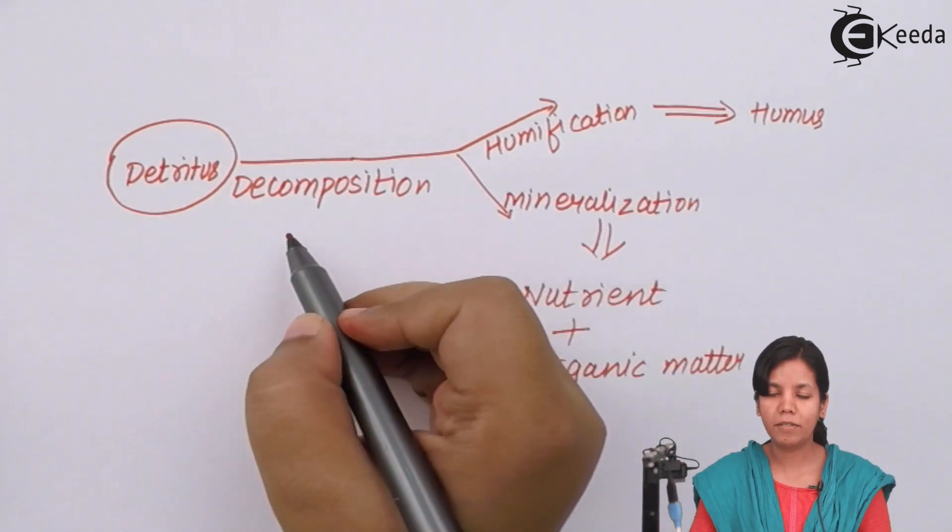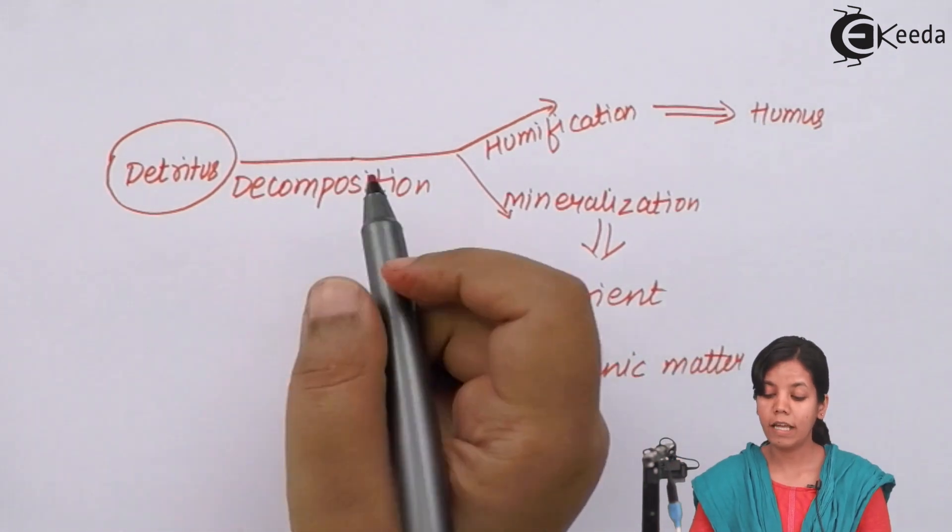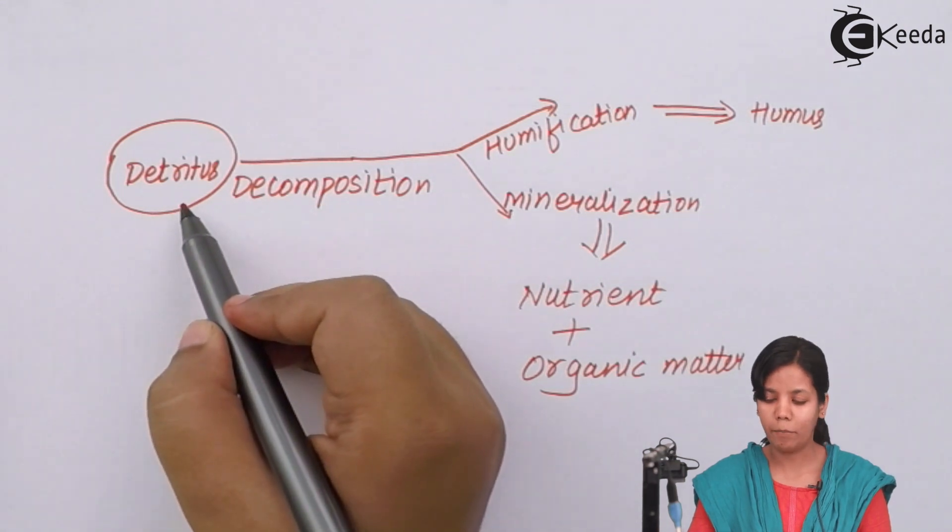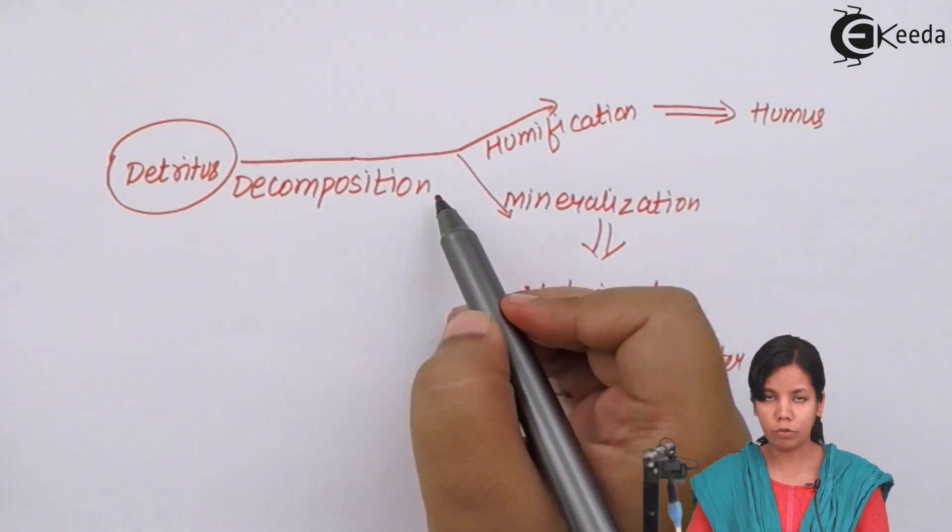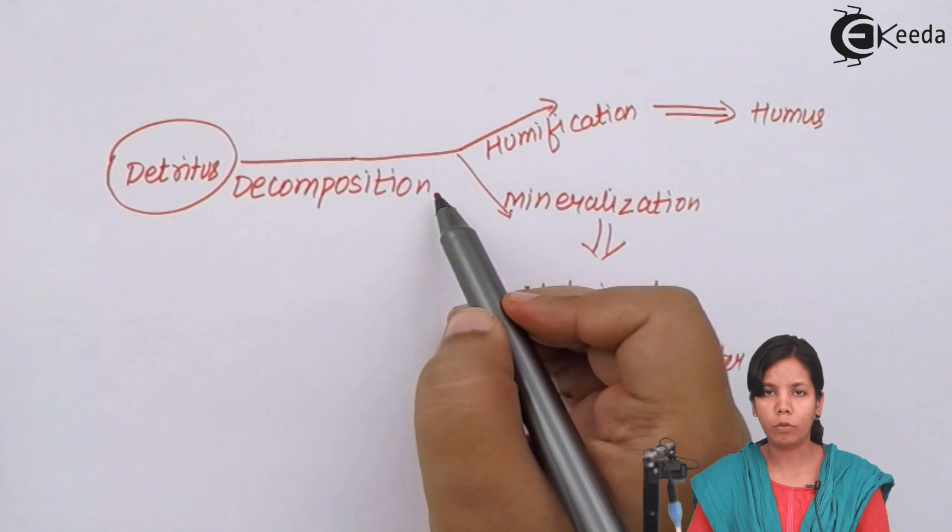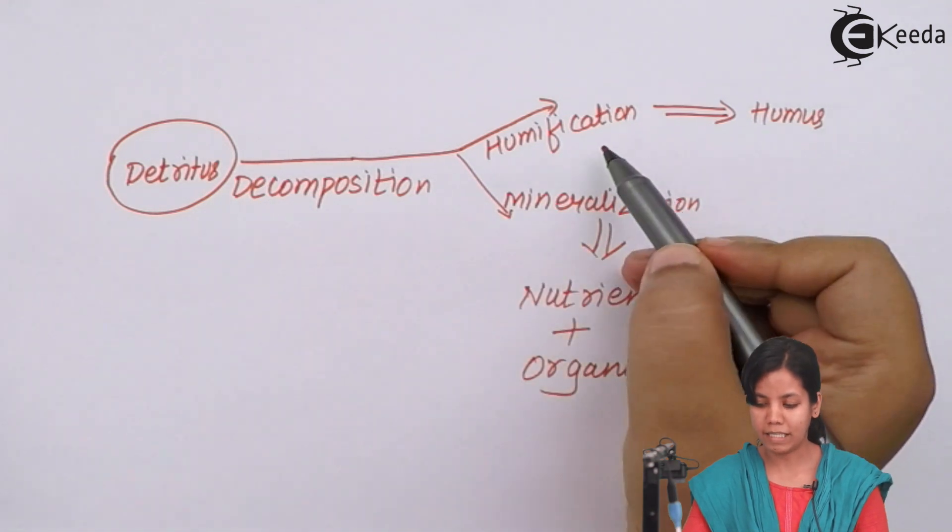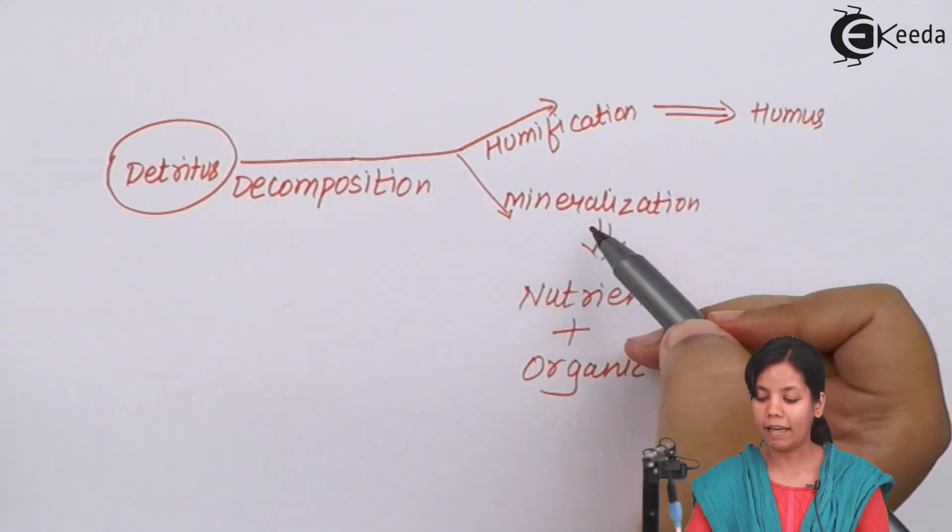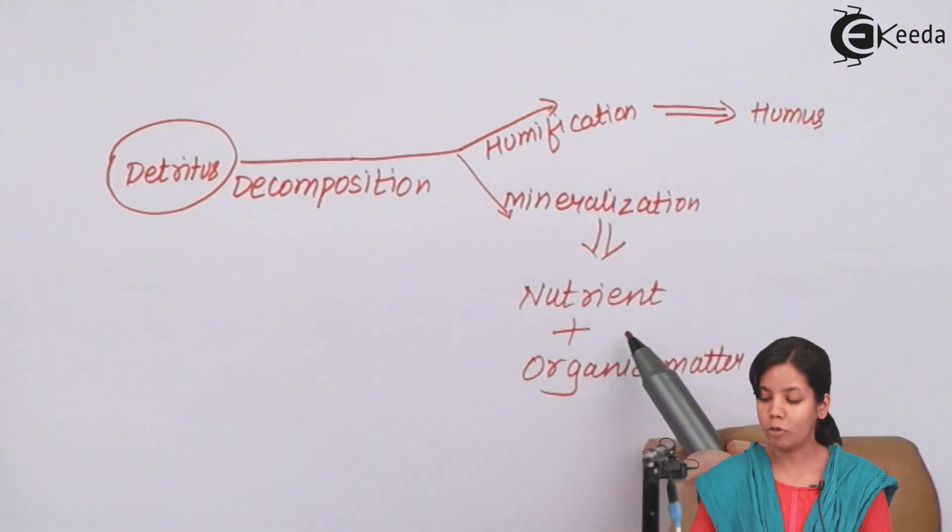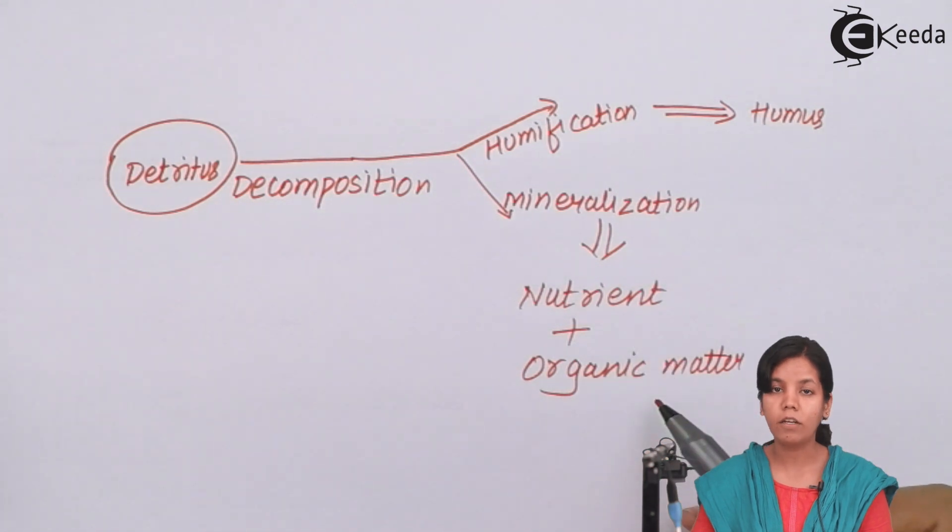The basic picture of decomposition is that a detritus or a dead organism or a dead body is present which undergoes decomposition in soil. After certain period of time, after the four steps of decomposition, the last step is basically humification, the formation of humus or soil-like substances, and mineralization, that is formation of nutrients and organic matter. The formation of phosphorus, nitrogen, sulfur, all these things which are given to the soil for the growth of plants.